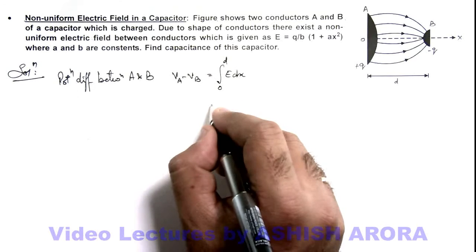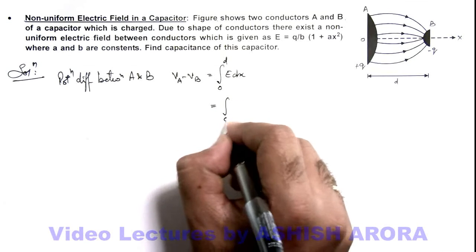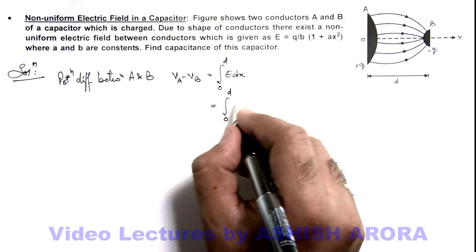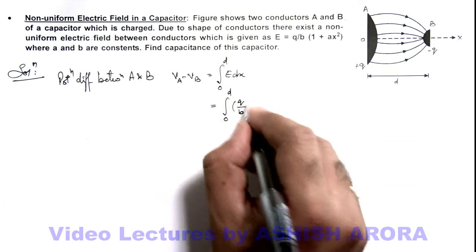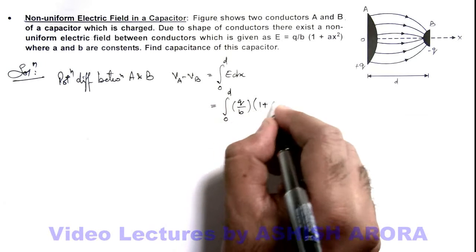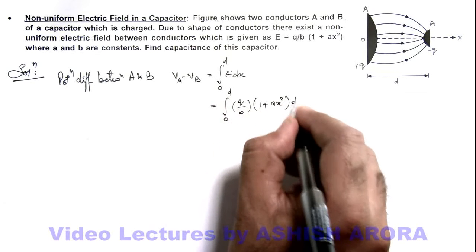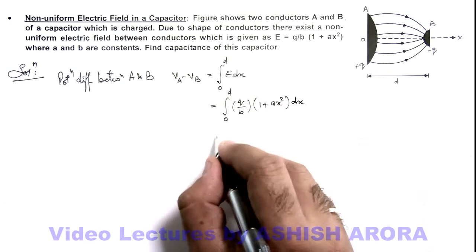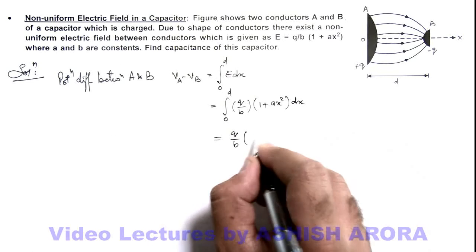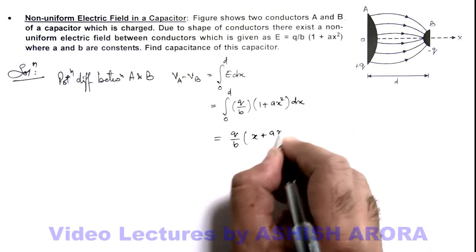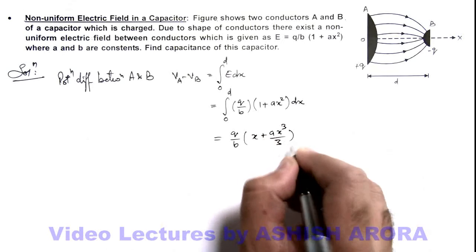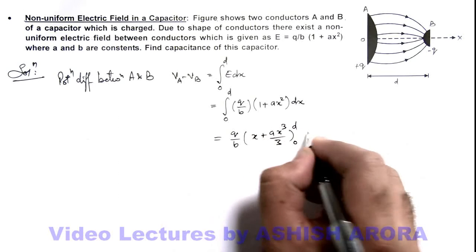So this will be integration from zero to d. The electric field we can write as q/b(1 + a·x²) dx, which on integration gives q/b(x + a·x³/3), and limits we substitute from zero to d.